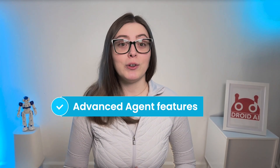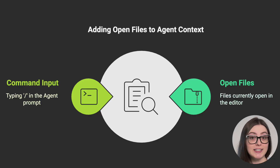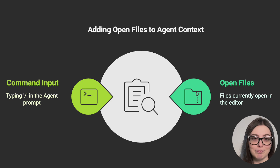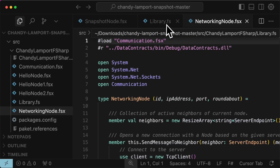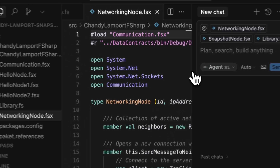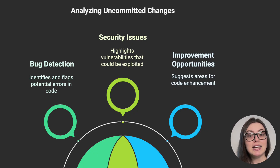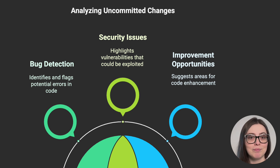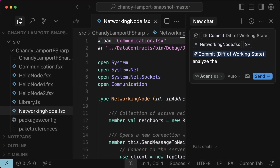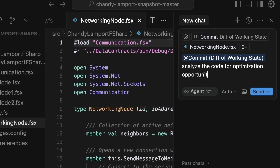Tip number four is a set of features from cursor's agent mode. The add open files to context command references files open in the editor. By typing slash in the agent prompt, we instantly add all currently open files to the context, which is crucial for giving the agent the complete picture of what we are working on. I have three files open in my cursor window — when I go to Cursor Chat and type slash, I can add open files to context. The commit command in our prompt instructs the agent to analyze uncommitted changes for bugs, security issues, or improvement opportunities. In Cursor Chat, typing the at command brings up the commit option to specifically tell our prompt to work with files that are different from our working state.